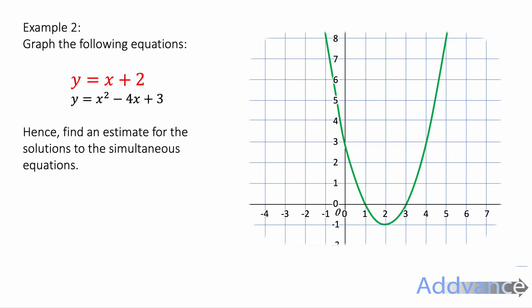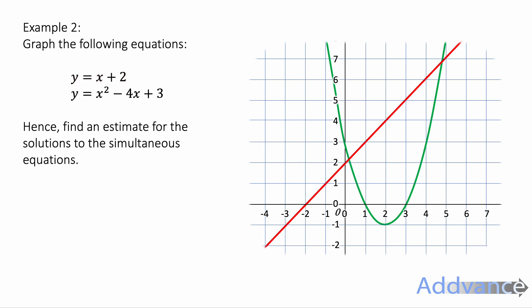Now I need to plot the line y equals x plus 2. That has a y intercept of 2 and has a gradient of 1. So it goes through these two points here and goes like that. You could also do that one with a table of values if you choose. So now we've got these two graphs plotted and we're going to find an estimate for the solutions to the simultaneous equations.